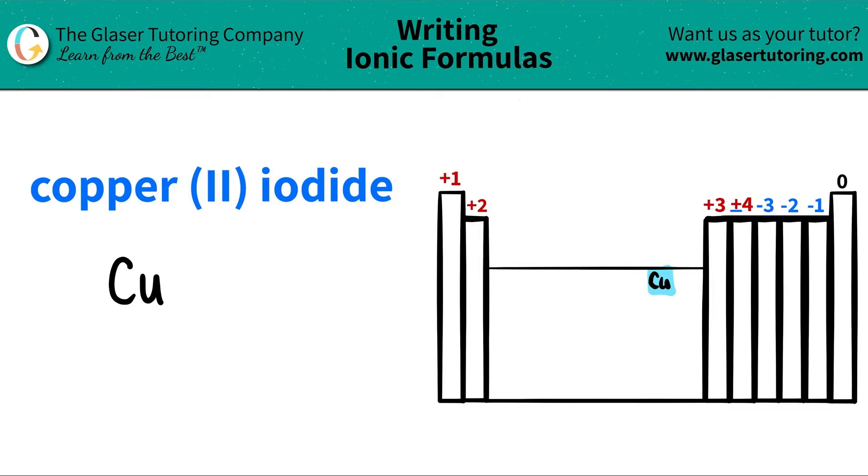Transition metals have different charges. What charge are we going to use for copper? That's why there's a Roman numeral here. The Roman numeral always tells you the charge of the metal. In this case it's a 2, so I will put copper +2. I know that it's a plus and not a negative because metals always have positive charges.